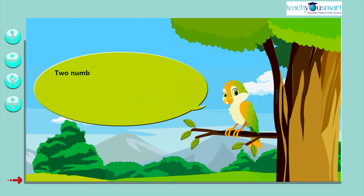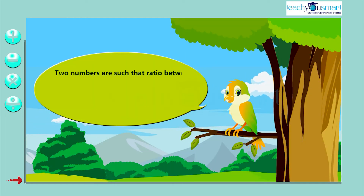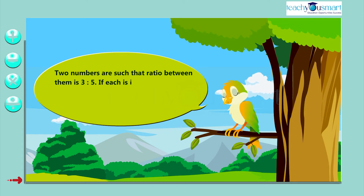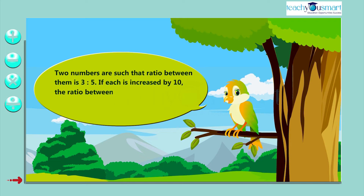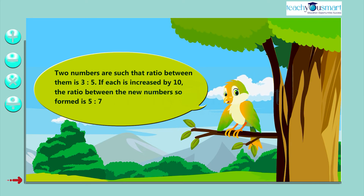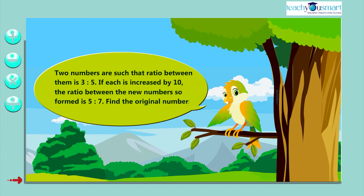Let's take another example. Two numbers are such that the ratio between them is 3 is to 5. If each is increased by 10, the ratio between the new numbers so formed is 5 is to 7. Find the original numbers.